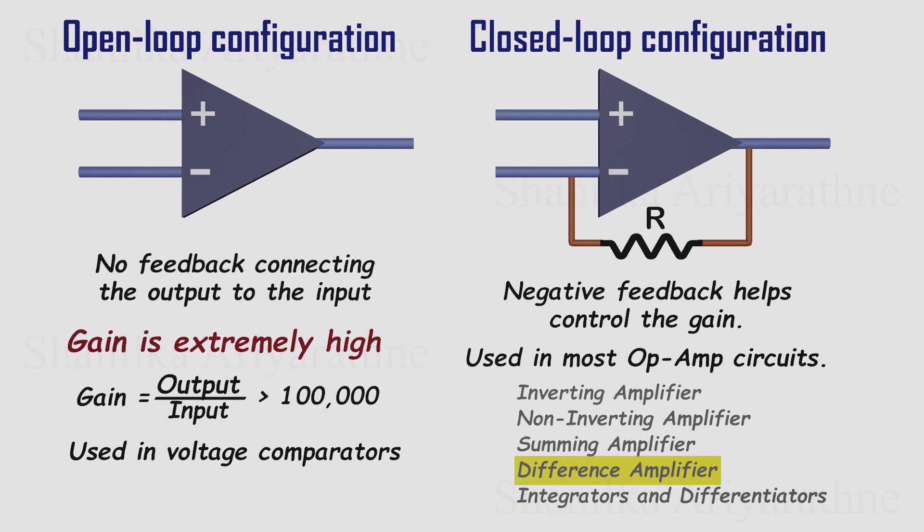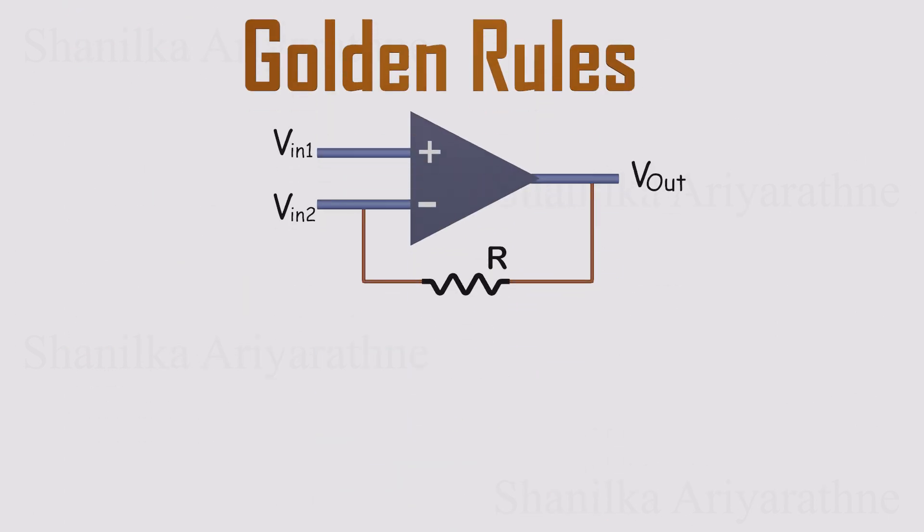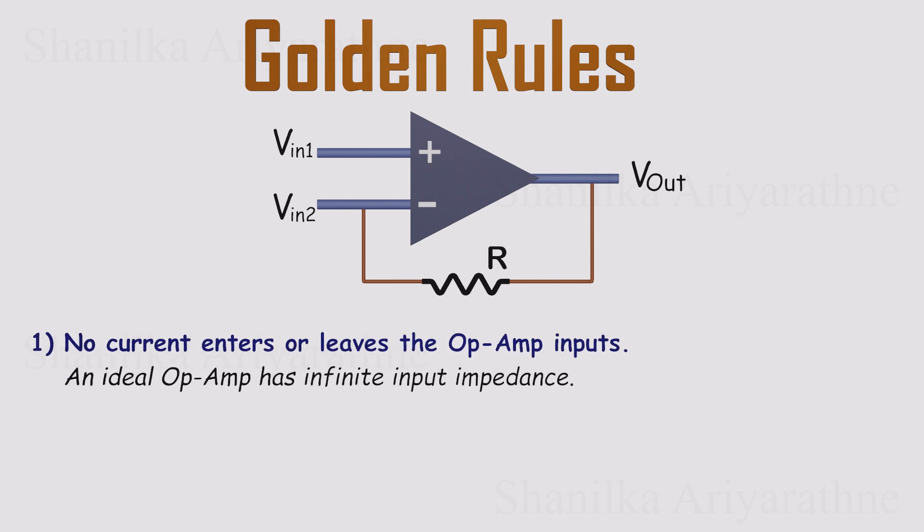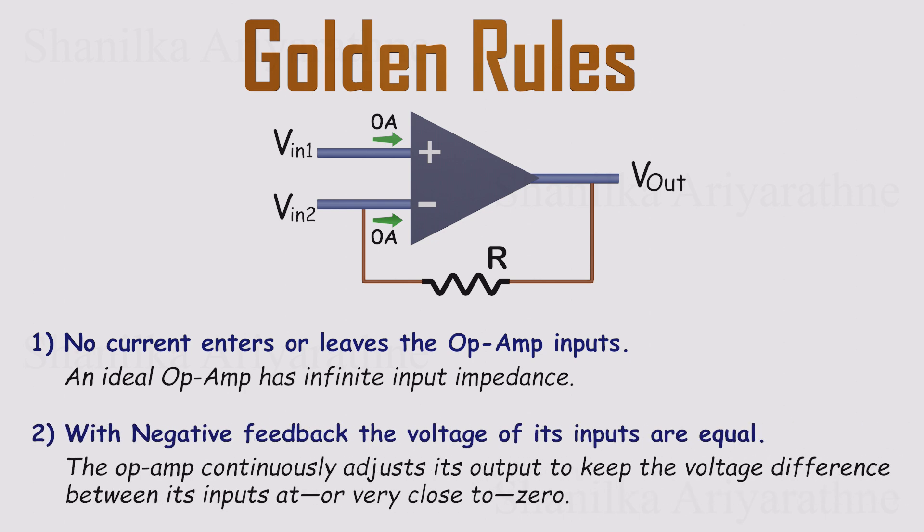Before we dive into applications, there are two golden rules for analyzing op-amps with negative feedback. They come straight from the ideal op-amp model and they make circuit analysis so much easier. Rule one, no current flows into the input terminals. In other words, an ideal op-amp has infinite input resistance. Rule two, with negative feedback, the voltages at the inverting and non-inverting inputs are equal. The op-amp constantly drives its output to keep their difference practically zero. These rules only hold when negative feedback is present, but when it is, predicting what the circuit will do becomes surprisingly simple.